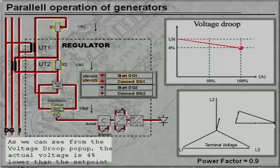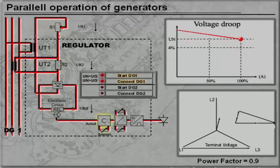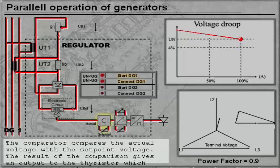As we can see from the voltage droop pop-up, the actual voltage is 4% lower than the set point voltage. The comparator compares the actual voltage with the set point voltage. The result of the comparison gives an output to the thyristor, which will parallel shift the droop until UG equals UN.